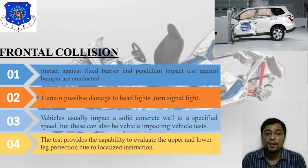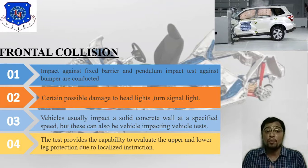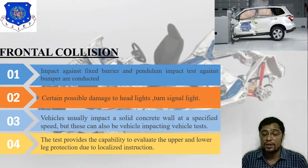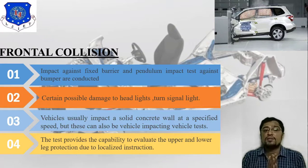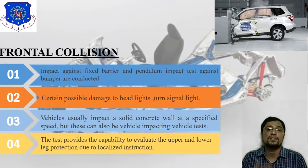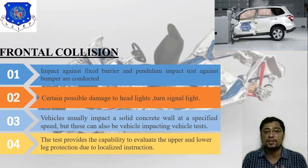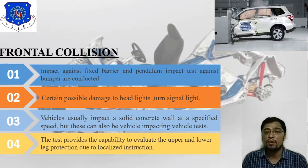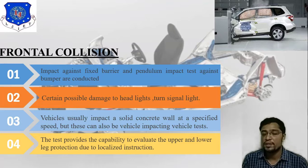A fourth point is that the test provides the capability to evaluate upper and lower leg protection due to localized intrusion. Frontal collision testing is run at the front part — it is just like destructive testing done at the front part, with examples including the crumple zone and airbag.